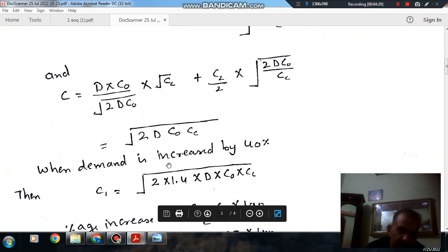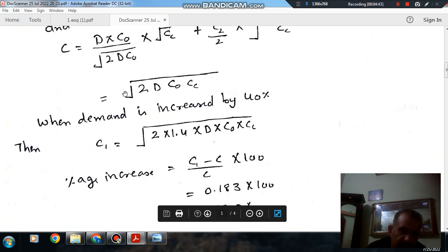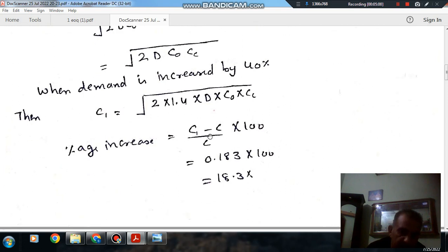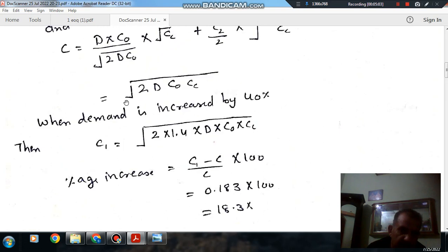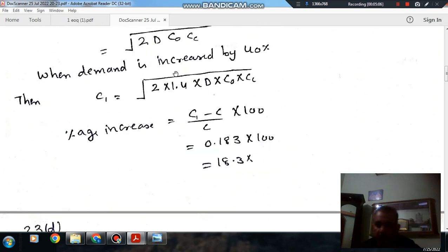So when the demand is increased by 40%, then this cost is also changing. Suppose this is now C1, and its value is the square root of 2 times 1.4DC0CC. So the percent increase is (C1 - C)/C, which equals the square root of 2 times 1.4DC0CC minus the square root of 2DC0CC. So we get 18.3%.